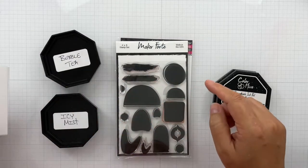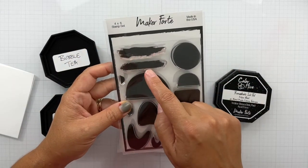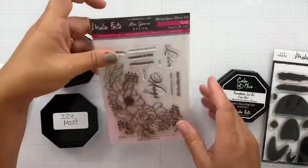And our card base is going to measure seven inches wide by four and seven eighths, and it's going to be scored at three and a half inches.